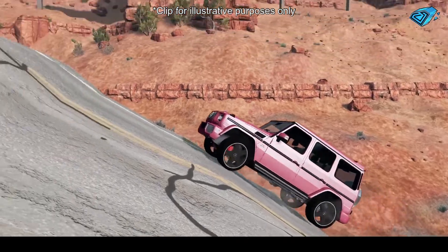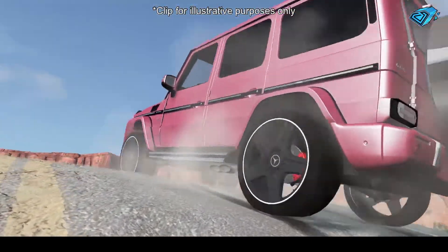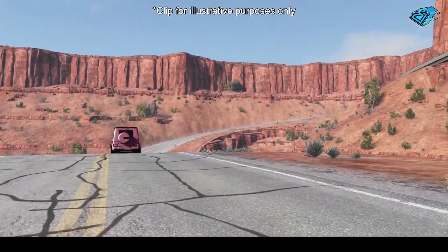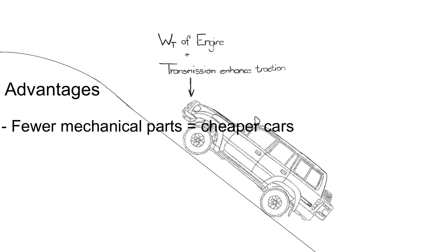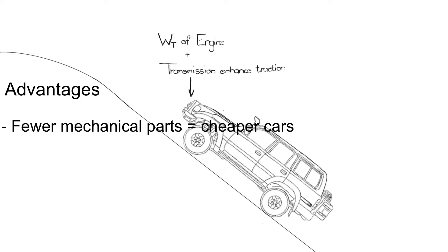One of the most significant advantages of front wheel drive is improved traction, especially when driving up a steep road. The weight of the engine and transmission that sit directly over the driven front wheels helps to enhance traction. Front wheel drive uses fewer parts and is cheaper to manufacture, making these cars generally cheaper to buy. It also returns better fuel economy because it is often lighter in weight. Front wheel drive vehicles are also more space efficient, as the mechanics are located at the front end, freeing up cabin space for passengers.